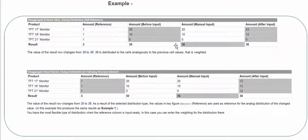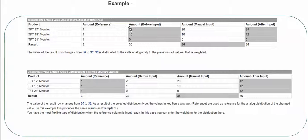Since the total is now 36 and the ratio among existing data is 2:1, the 36 is distributed proportionally: 24 and 12. It simply calculates the ratio relative to the available data and distributes accordingly. Now I'm moving to the next option: disaggregate value entered with analog distribution to following structured element.